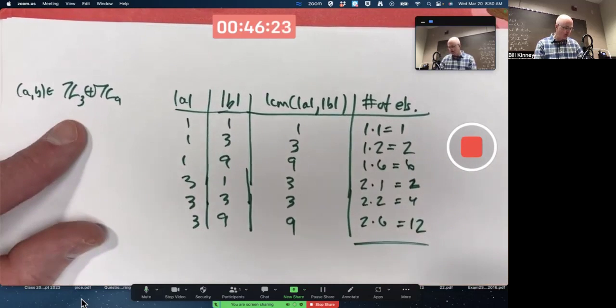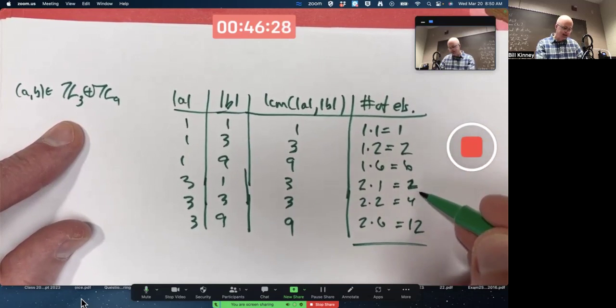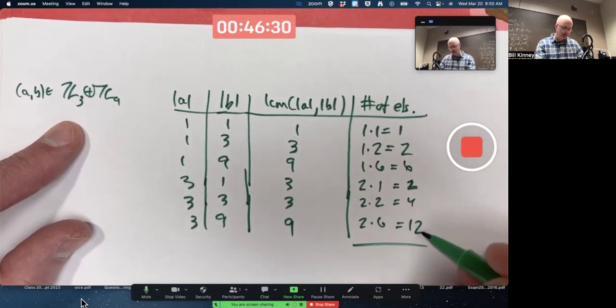Do these numbers add up to the order of the group, 27? One plus two is three, plus six is nine, plus six more is 15, plus 12 is 27.